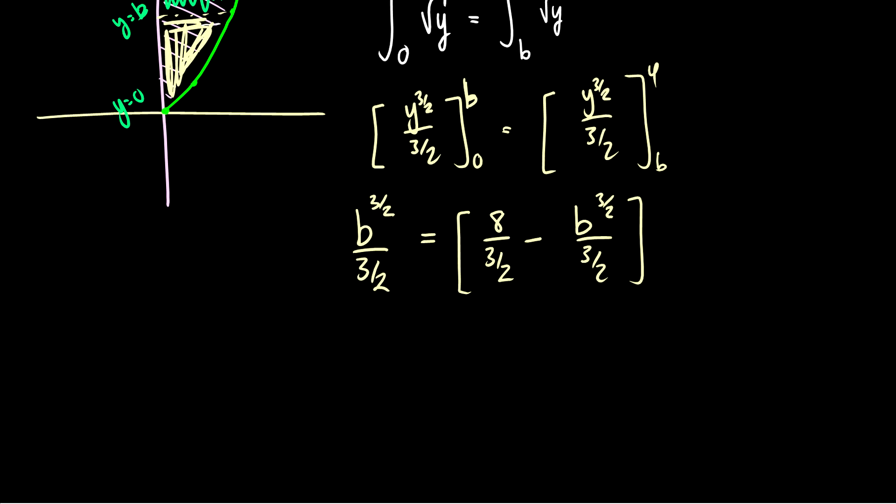Okay so let's simplify the left and right side so b to the 3 halves over 3 halves is just going to be 2 b to the 3 halves over 3. This will be equal to well 8 over 3 halves is just 16 over 3 minus 2 b to the 3 halves over 3.